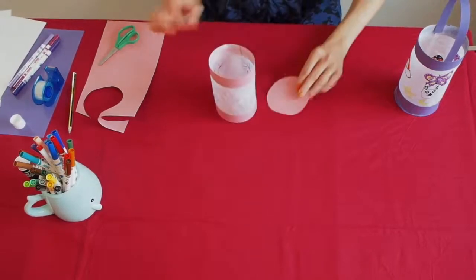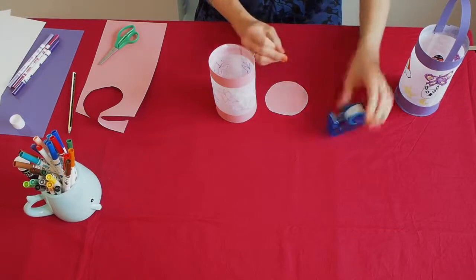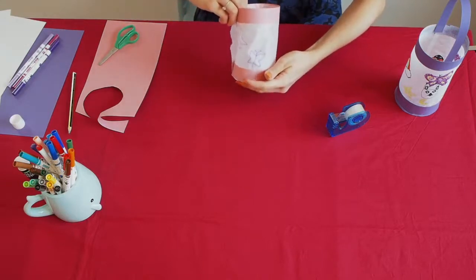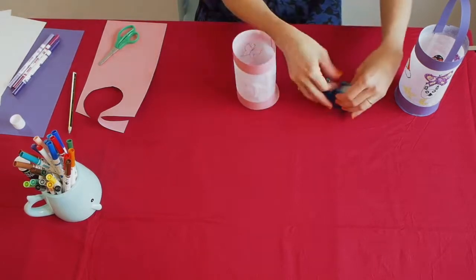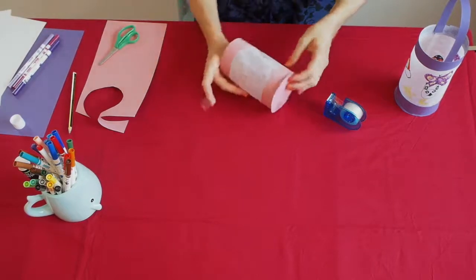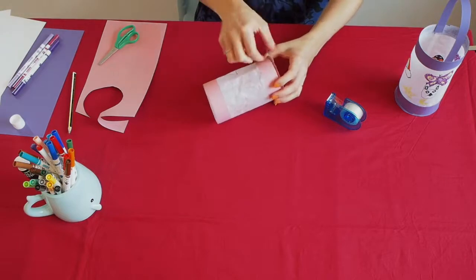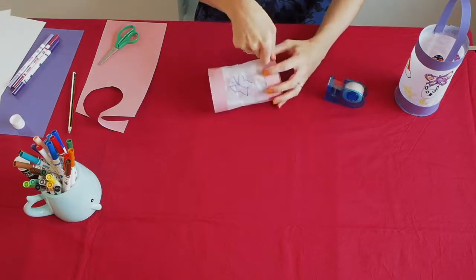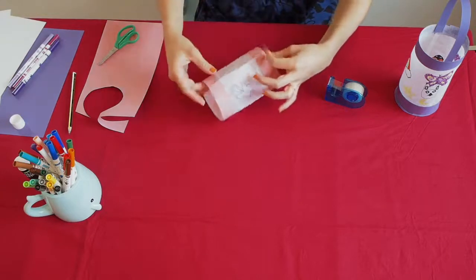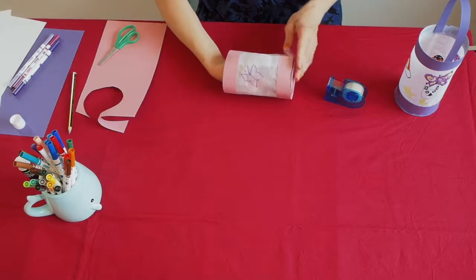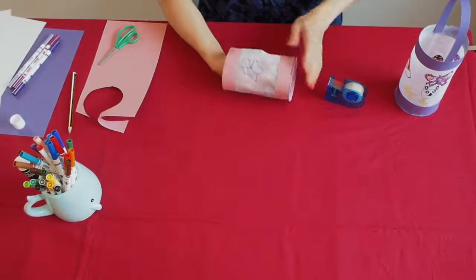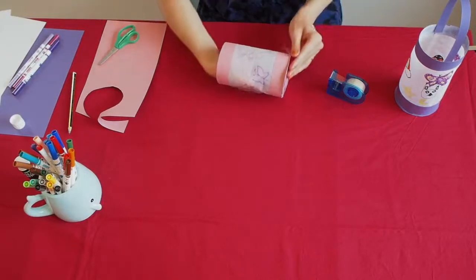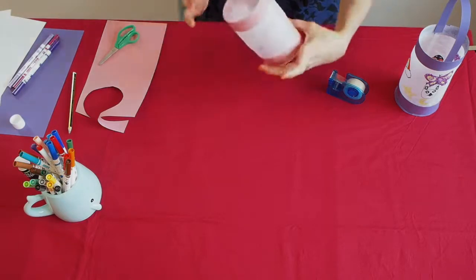So, we take our paper lantern back. Sticky tape and we stick it like this. And we do on the other side. If you want to stick it properly, you can also gently put your hand inside. So, it won't come off. There. Done!